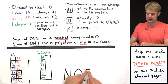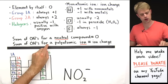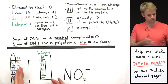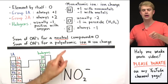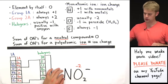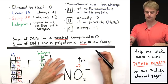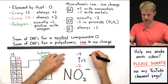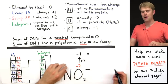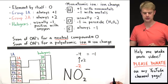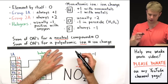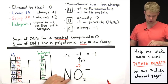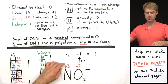NO2 one minus — it is an ion, so this is going to be a little bit different. The rule here is: the sum of oxidation numbers for a polyatomic ion equals the ion charge. Nitrogen — we don't know what its oxidation number is going to be. But oxygen is usually minus two, and we have two oxygens, so minus two times two gives us minus four altogether. Whatever nitrogen is, combined with minus four, we need to get minus one — because that's the ion charge of NO2 one minus. So plus three minus four gives us minus one, meaning nitrogen's oxidation number is plus three.